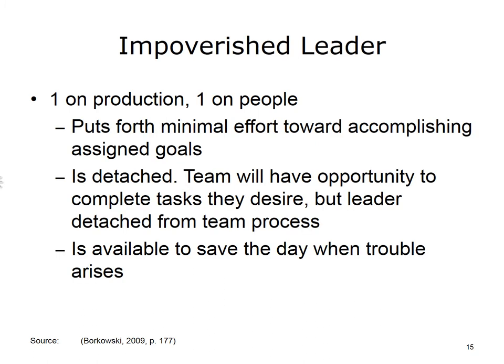The impoverished leader is represented by a 1 on production and a 1 on people, meaning low task and low focus on relationships. This type of leader puts forth minimal effort toward accomplishing assigned goals and tasks, focusing on only completing the amount of work absolutely required to sustain a leadership position within an organization. The group working with this type of leader will have the opportunity to complete assigned tasks as they desire; however, the impoverished leader may appear to save the day when trouble arises.